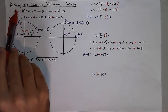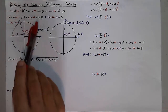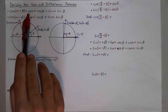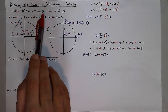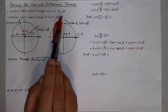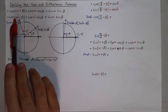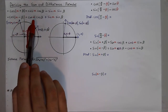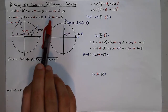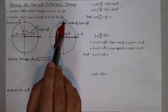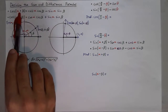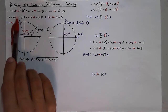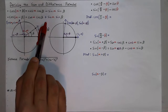For example, cosine of alpha plus beta — alpha and beta being two different angles or the same — is equal to cosine of alpha times cosine of beta minus sine alpha times sine beta. And for cosine of alpha minus beta, it's cosine of alpha cosine of beta plus sine alpha sine beta. Whenever we add on the inside we subtract on the outside, and when we subtract on the inside we add on the outside.